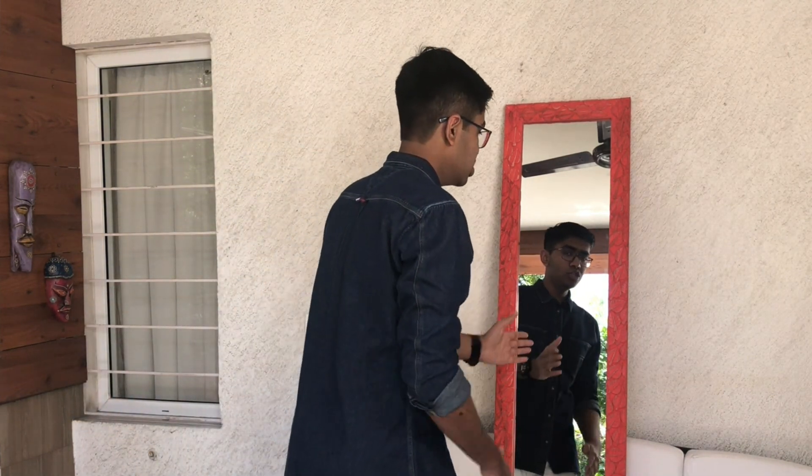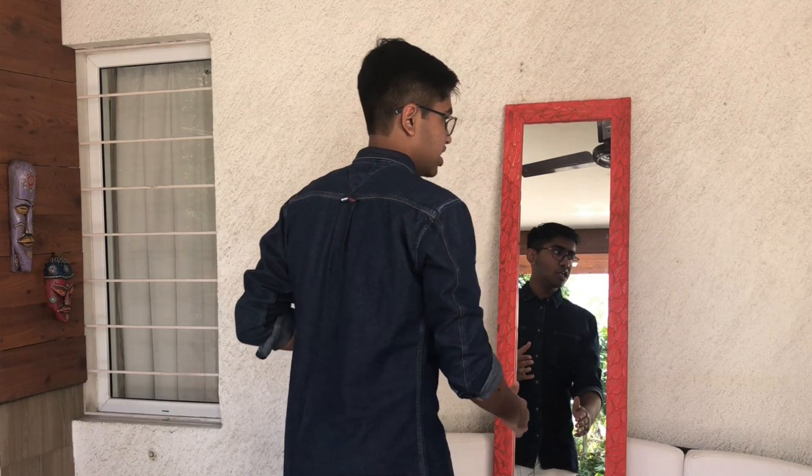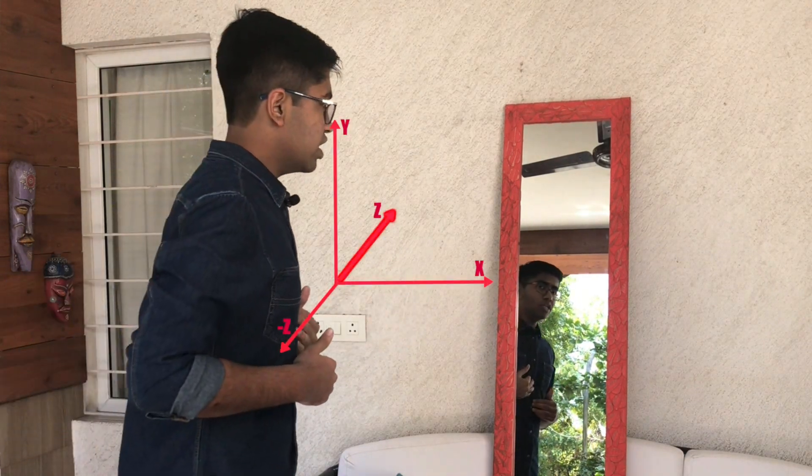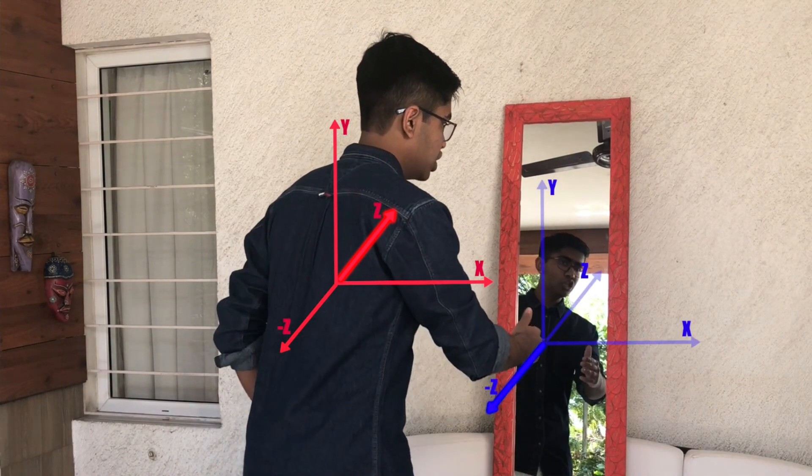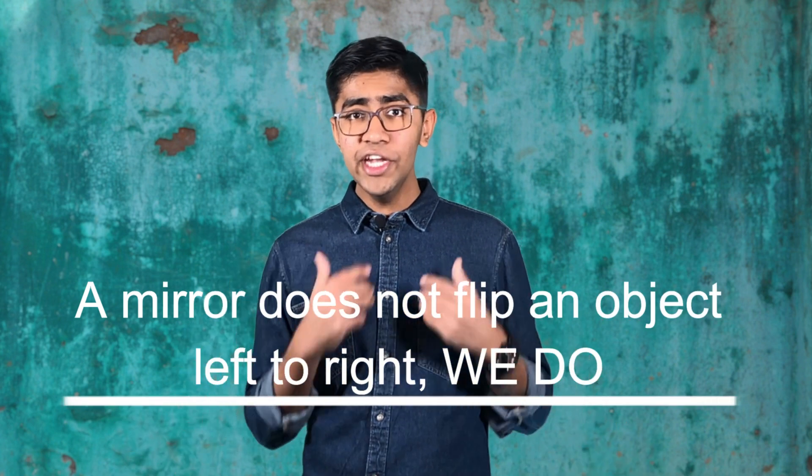And there's the flip you're looking for. Forward and backward get reversed in a mirror. As I move closer to the mirror, my image moves closer to me. And as I move away from the mirror, my image moves away from me. So if I am moving in the positive z direction, my image is moving in the negative z direction. A mirror doesn't flip an object left to right — we do.